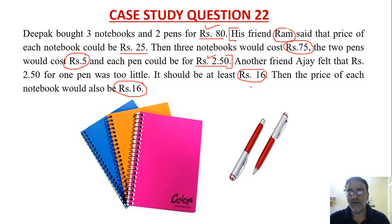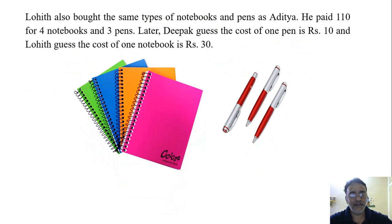So Ram or Ajay ka estimation aisa tha. Abhi ek or friend jo hai, Lohit. Now Lohit also bought the same types of notebooks and pens as Deepak. He paid Rs. 110 for 4 notebooks and 3 pens. Later Deepak guessed the cost of one pen is Rs. 10. And Lohit guessed the cost of one notebook is Rs. 30.